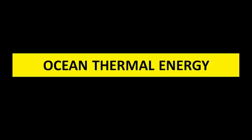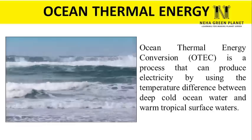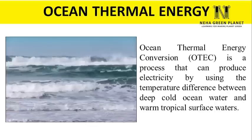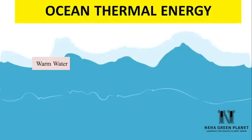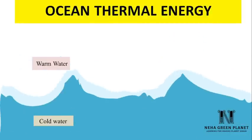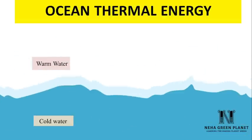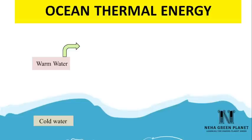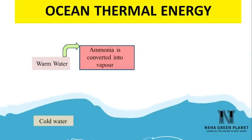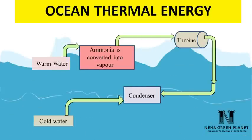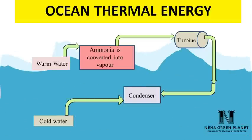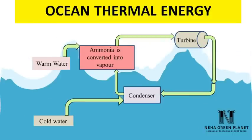Ocean thermal energy is harnessed using the temperature difference between warm upper ocean layers and cold deep ocean layers. If the temperature difference between warm and cold water is more than 20 degrees Celsius, ocean thermal energy can be harnessed. Warm water is used to boil a liquid like ammonia; its vapours run a turbine to generate electricity, and the vapours are then condensed using cold water from deep ocean layers, returning the liquid ammonia for reuse.